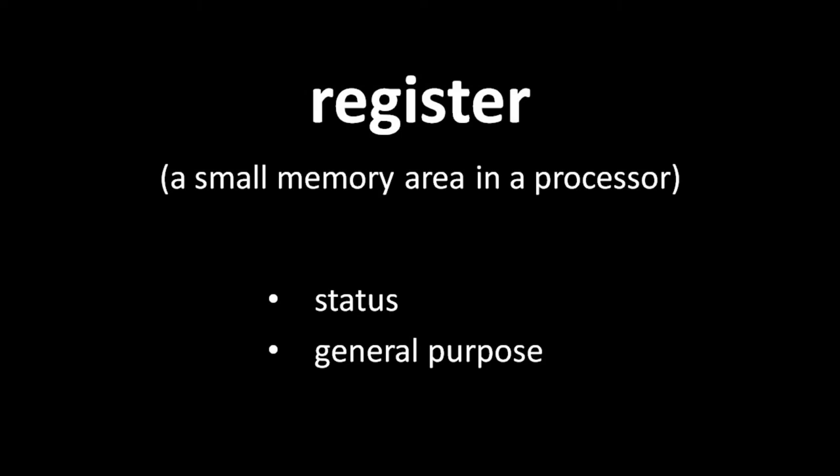A register is a small, volatile data storage area inside the CPU. The CPU's registers can be categorized into two kinds: status registers and general purpose registers. A status register stores data that affects the operation of the CPU. For example, some CPUs operate in different modes, and so such a CPU will typically have a status register in which the bits designate the current mode. Every CPU also needs to keep track of the memory address for the next instruction to read, and they do so in a status register called the program counter. A jump instruction really just modifies the program counter, thereby causing execution to jump to the new address.